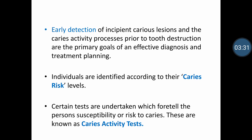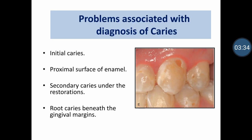Today's class focuses on the diagnosis of caries clinically. The main problems associated with caries diagnosis include the need to detect initial caries and gain access to proximal surfaces, which are hidden areas without direct visual access. We should also be able to detect secondary caries under restorations and root caries beneath gingival margins. These are the hidden areas where we often go wrong in diagnosing caries, and we sometimes overlook these areas.